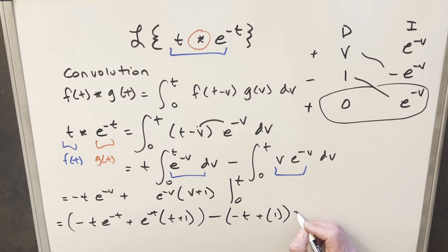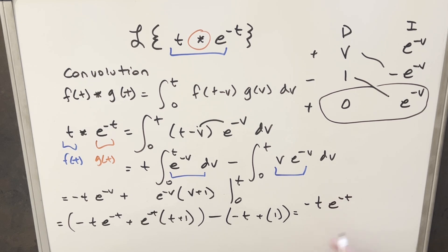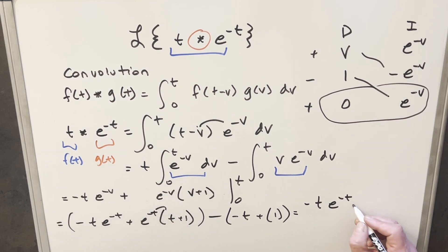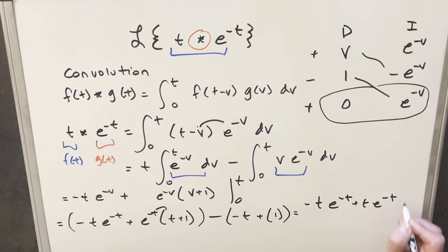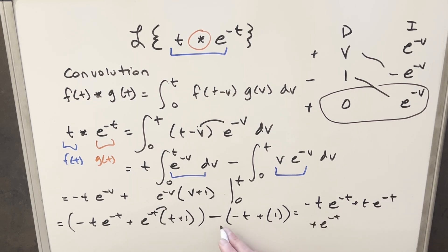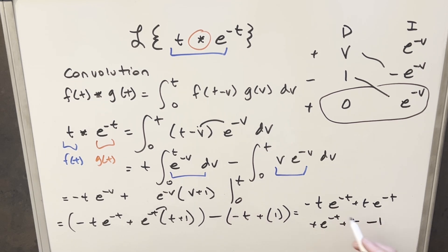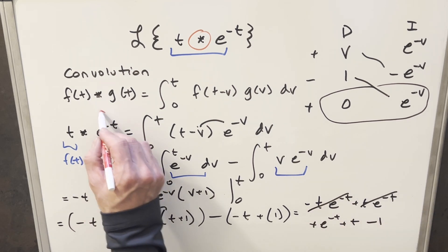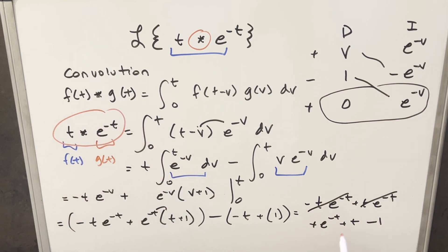Let's simplify the whole thing. The first term gives minus 2 e to the minus t. Distributing in, we get t times e to the minus t, then e to the minus t. Minus times minus gives plus t, and minus times 1 gives minus 1. These terms cancel, and so for this convolution of t and e to the minus t, we just get e to the minus t plus t minus 1.